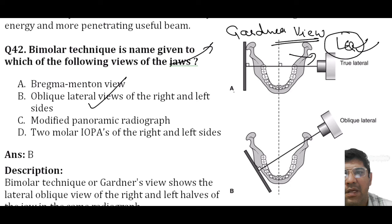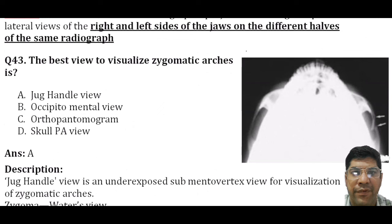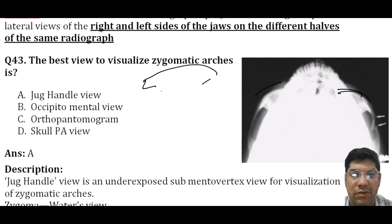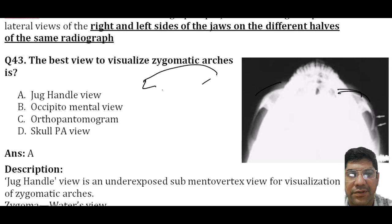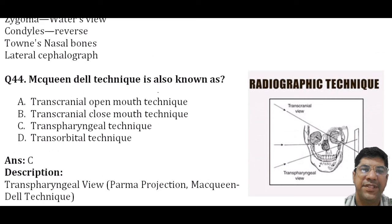The best view to visualize the zygomatic arches is the jug handle view, which is an underexposed submentovertex view. The occipito-mental view is used to visualize the occipital bone and chin region. OPG is not the answer. The skull PA is the posterior-anterior view of the skull.